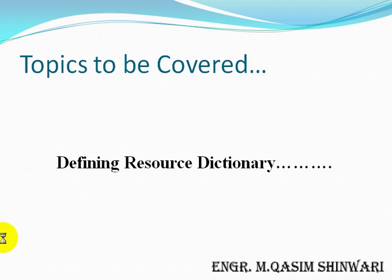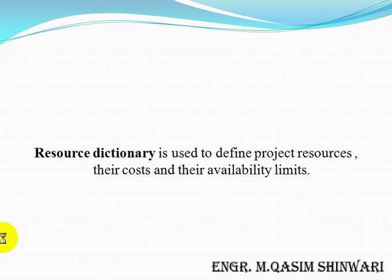What is a resource dictionary? A resource dictionary is used to define project resources, their costs, and their availability limits. We define how many labors we have, what is the price per unit of a labor, architect, carpenter, draftsman, etc. We define all these things in the resource dictionary. So let us come to define it.